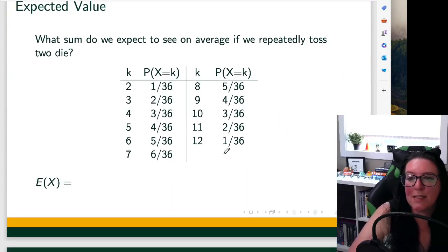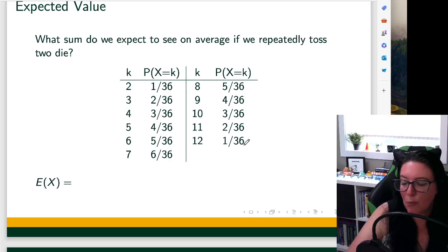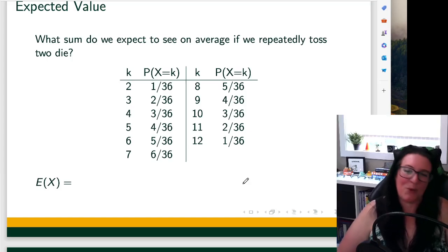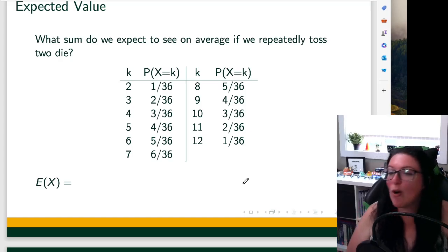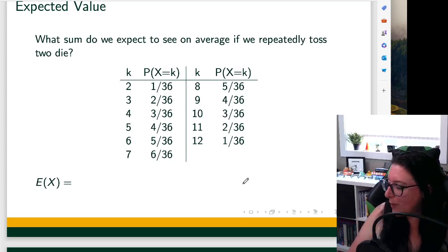What sum would we expect to see on average if we roll the dice? Here, the dice were rolled 36 times and you can see those outcomes here. How would we go about finding that? We would say,